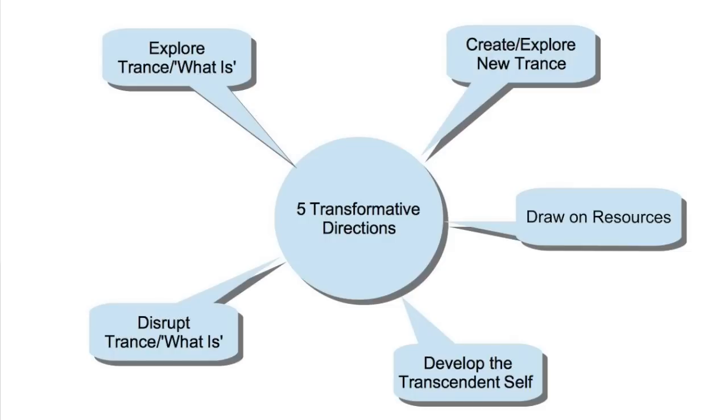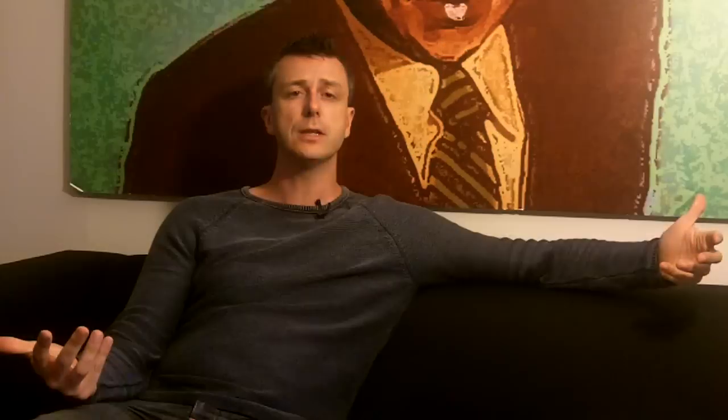The fifth and last direction is develop the transcendent. Referring back to the Trance and Transcendence model: we work with individual trances and with the transcendent self — the totality of who this person is that goes beyond any given specific moment or specific trance. A capacity for somebody to identify with their transcendent self is the broadest bandwidth trance you can be in. Milton Erickson referred to therapeutic trance — a very broad bandwidth trance where people have access to the totality of who they are.